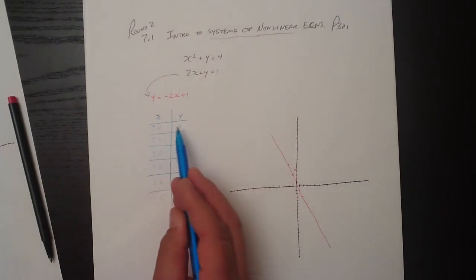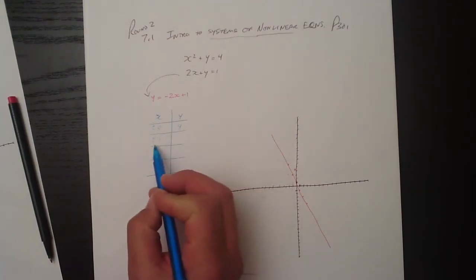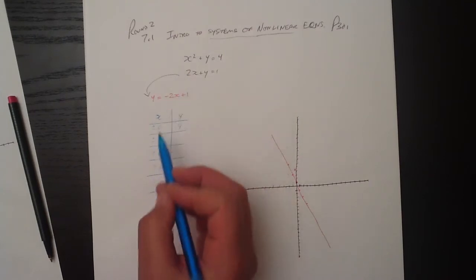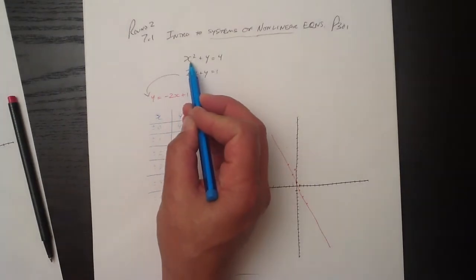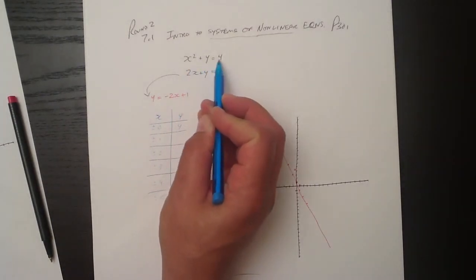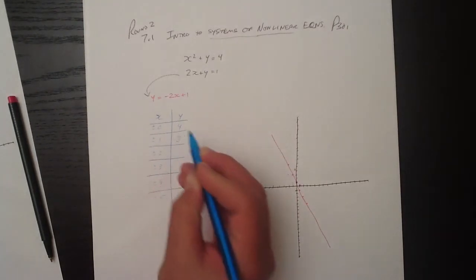So 0, 4 will be one of the coordinates. If we put 1 in for x or minus 1 for x, whether it's minus 1 or plus 1, x squared will be what? 1 plus something equals 4. Well, 1 plus 3 equals 4. So we put a 3 there.